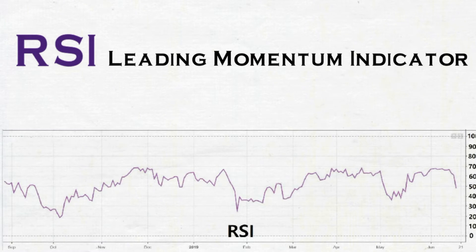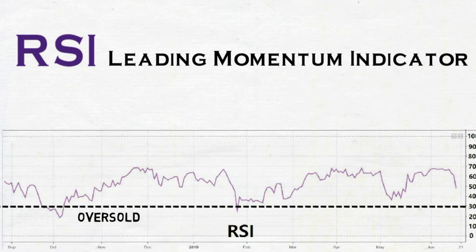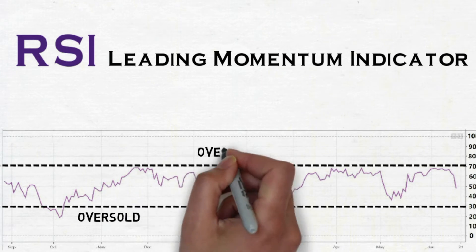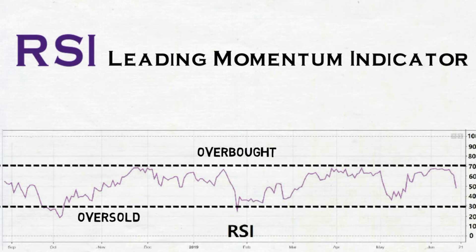RSI oscillates between 0 to 100 as shown below. Traders interpret that if RSI touches 30, it indicates a price oversold condition, and if the price touches 70, it indicates a price overbought condition. We will explain this in detail.